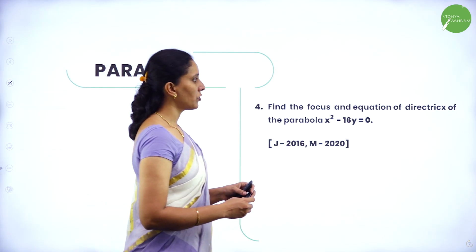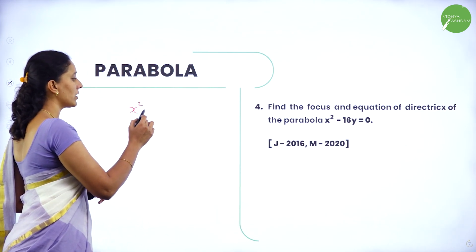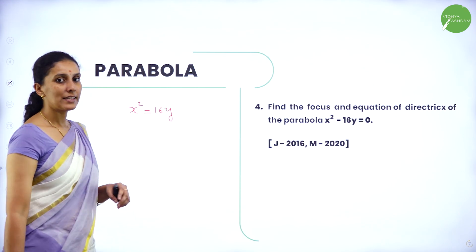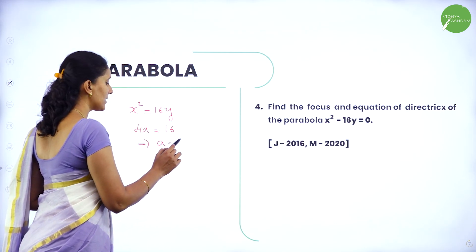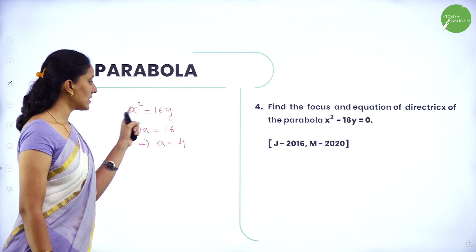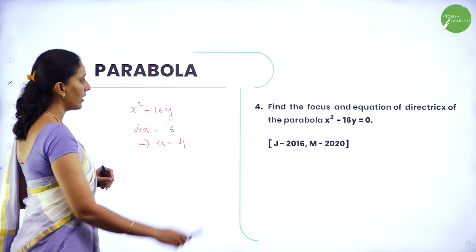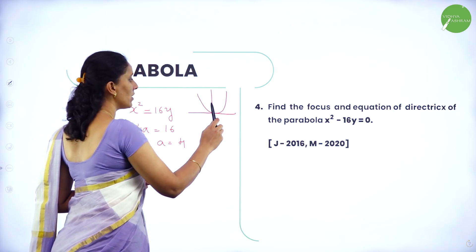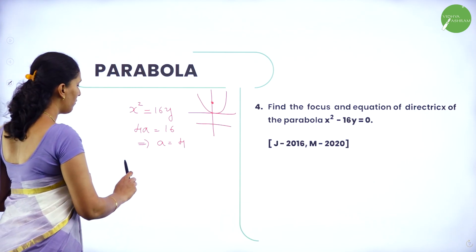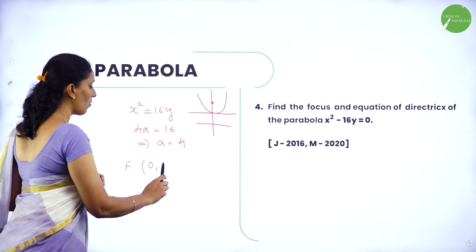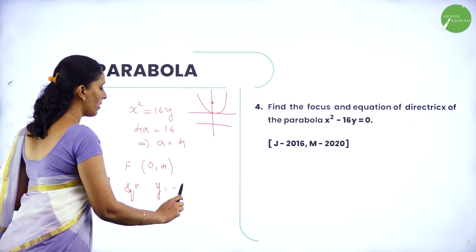Next: find the focus and equation of directrix of the parabola x² minus 16y = 0. This can be written as x² = 16y, so 4a = 16, which gives a = 4. Clearly, this is an upward parabola. For an upward parabola, the focus is on the positive side of the y-axis and the directrix is on the negative side. So focus F = (0, 4) and equation of directrix is y = minus 4.